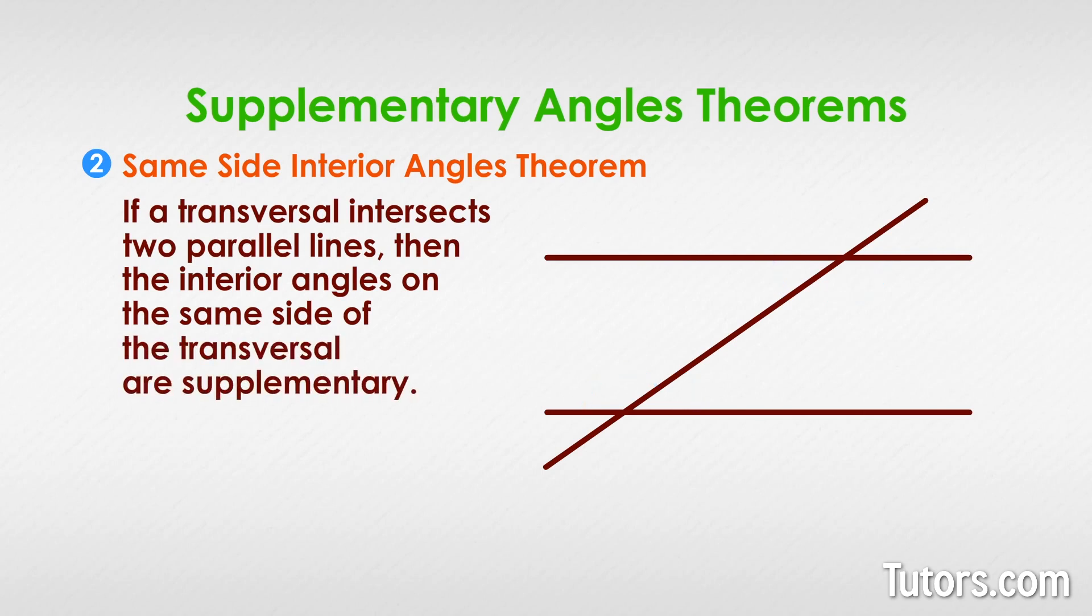A transversal through two lines creates eight angles, four of which can be paired off as same side interior angles. The Converse of the Same Side Interior Angles Theorem is also true.